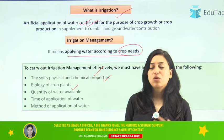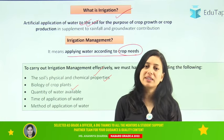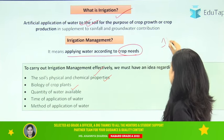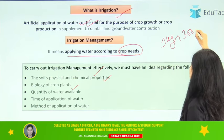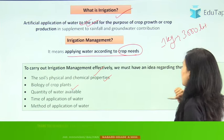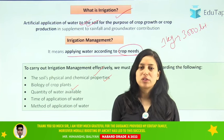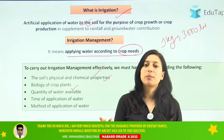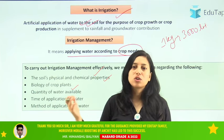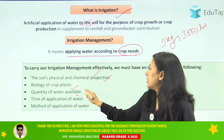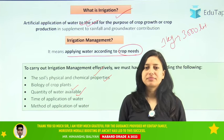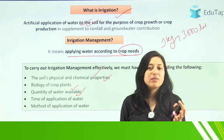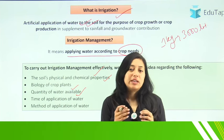The second factor is the biology of the crop. Irrigation management also depends on crop biology because some crops require more water compared to others. For example, for growing one kilogram of rice we require approximately 3000 liters of water. Not every crop requires this much water, so irrigation management will depend upon the biology of the crop.